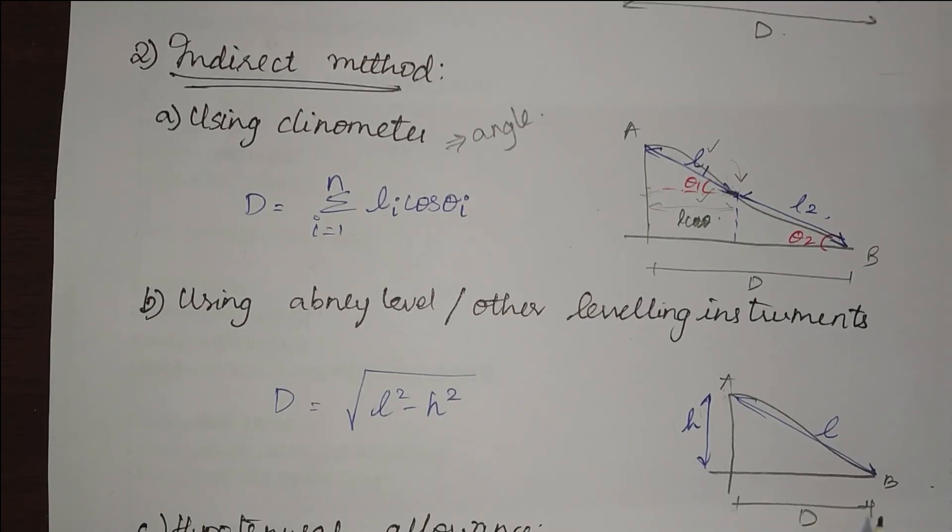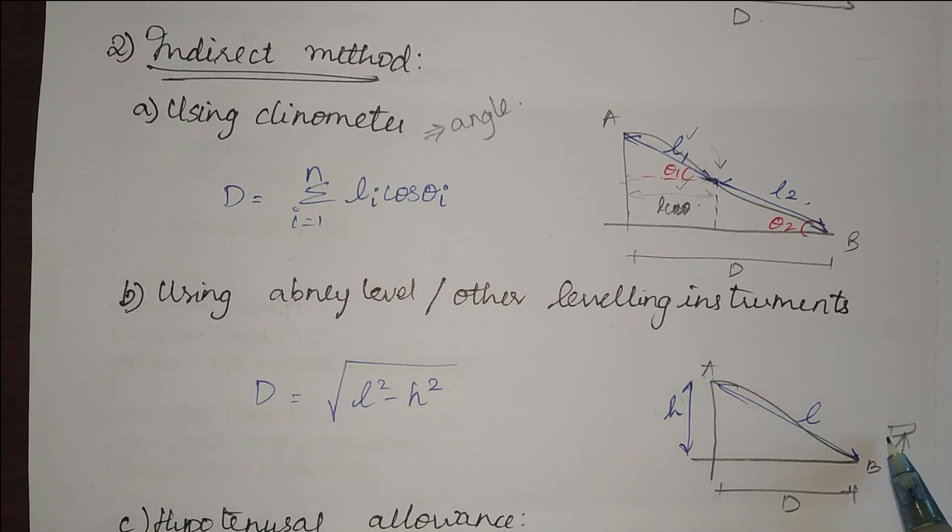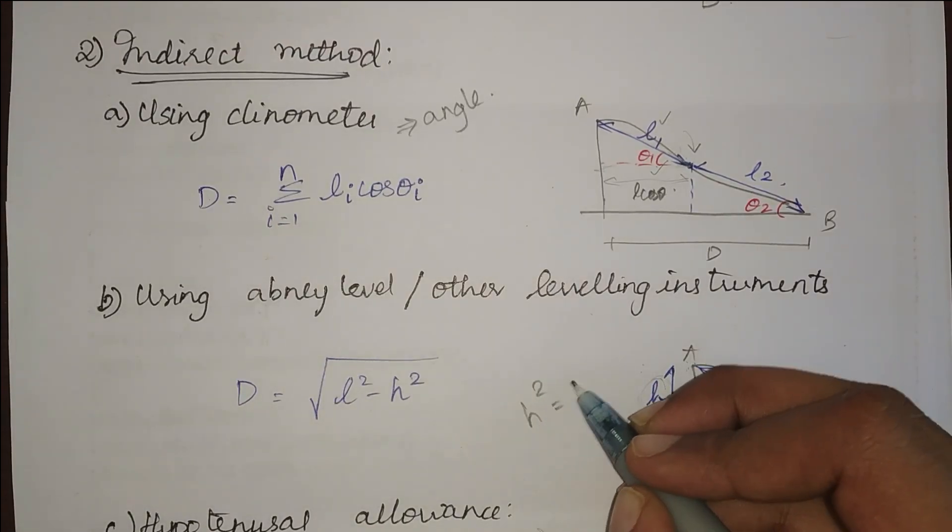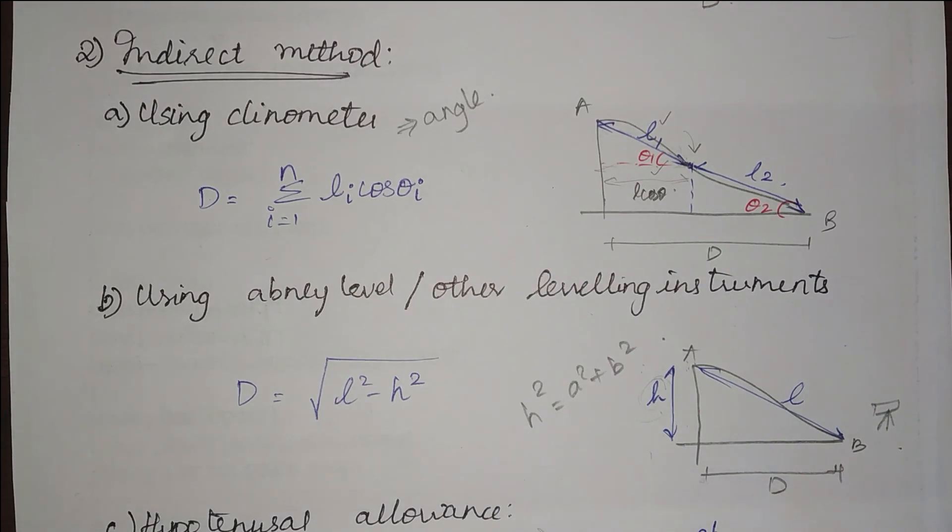Next one is abney level or other leveling instrument. In this method we will take a leveling instrument and find the difference in level between A and B, let it be h. If we know h, we will find the sloping distance using Pythagoras theorem which says hypotenuse square is equal to square of other two sides. From this we need to find D, so it is square root of l squared minus h squared. This is using the leveling instrument.